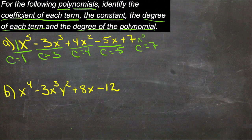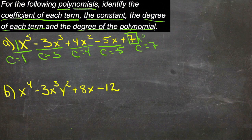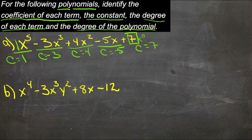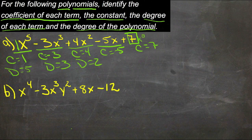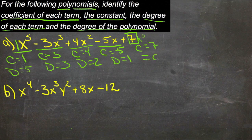Then we need the constant term — that would be the x to the 0 term, so 7. The degree of each term is the power associated with each of those terms. So our first one, the degree is 5. Then we have a degree of 3, and 2, and 1, and 0.